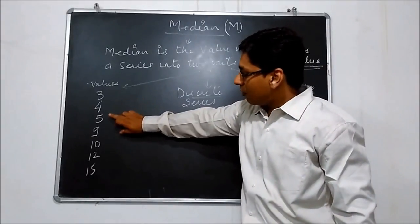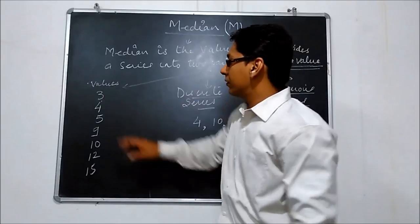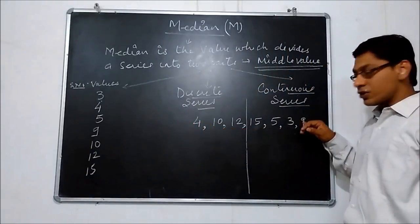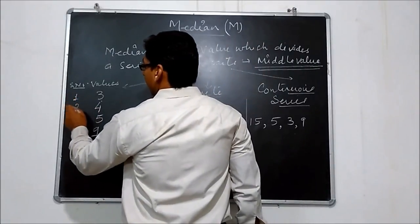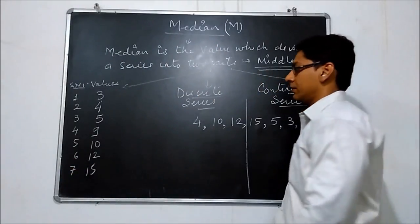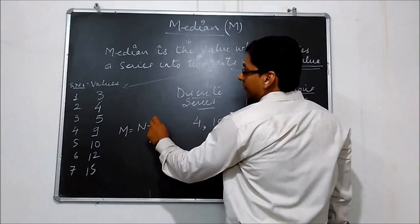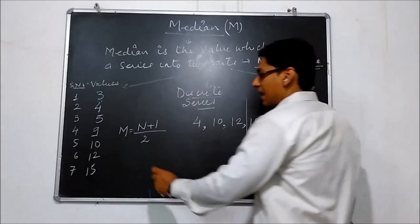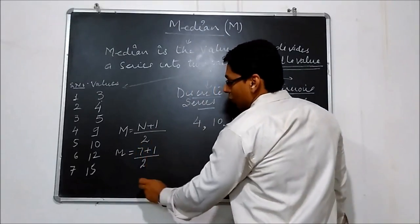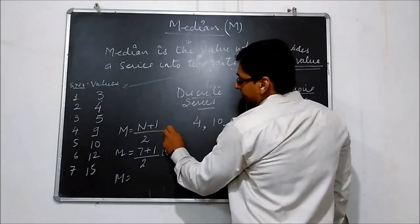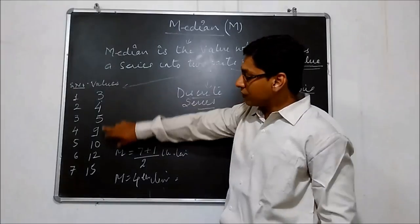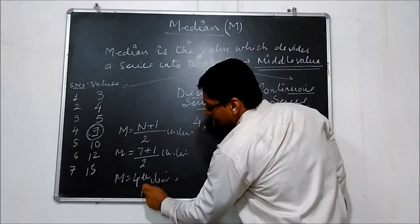Data: 3, 4, 5, 9, 10, 12 and 15. We give serial numbers. Assigning serial numbers does not affect the series — it remains an individual series because only values are available. We have 7 numbers, so n = 7. Now we apply formula M = (n+1)/2 = (7+1)/2 = 4th item. The 4th item is 9. Therefore, median equals 9.